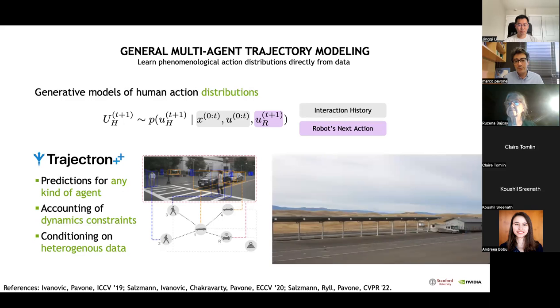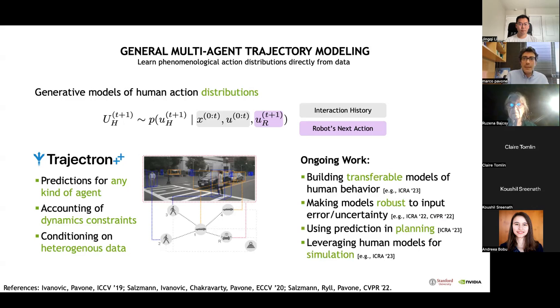We have thoroughly tested Trajectron++ in closed loop with planning algorithms on a test vehicle at the Center for Automotive Research at Stanford. The robotic vehicle in the movie on the right is the one that has a red rooftop. The role of the human driven vehicle is taken by a small RC car, which is remotely controlled. The reason why we use an RC car is that we want to stress test our algorithms in highly interactive situations while ensuring nobody gets injured in case of a failure.